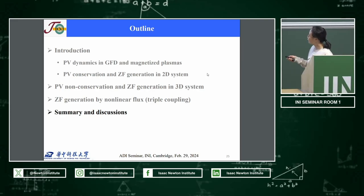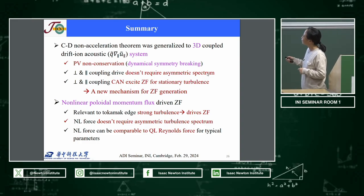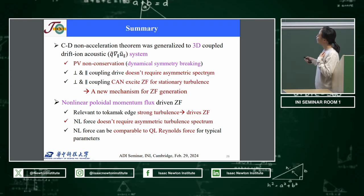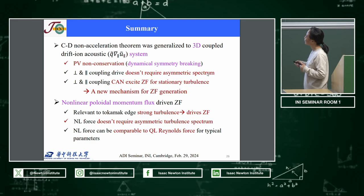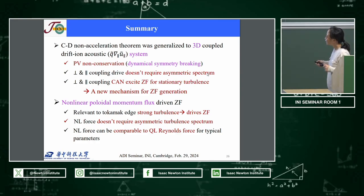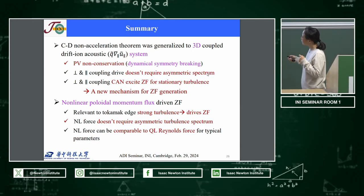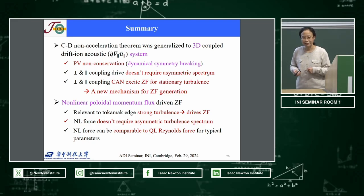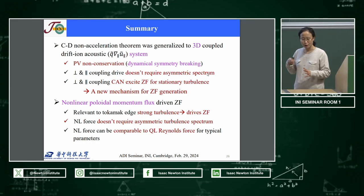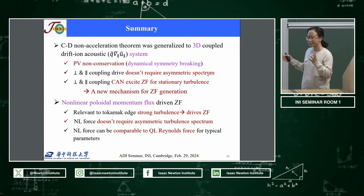In summary, I showed two cases: first, in a 3D system the potential vorticity is not conserved, and this can drive zonal flow; second, the nonlinear momentum flux can also drive zonal flow. I want to stress the importance of symmetry breaking physics for zonal flow generation and other coherent structure formation.